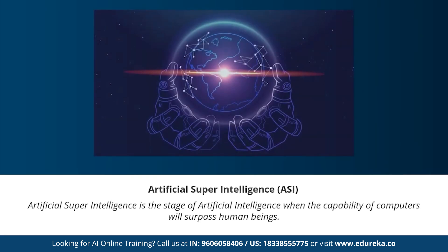Moving on to our last stage: artificial super intelligence. Artificial super intelligence is the stage of AI when the capability of computers will surpass human beings. It is currently seen as a hypothetical situation as depicted in movies and science fiction books — machines taking over the world. Such systems don't currently exist; we don't have any machine capable of thinking or reasoning better than a human being. Artificial super intelligence refers to any system that is much smarter than humans.